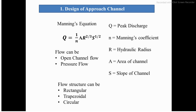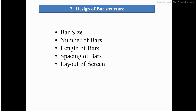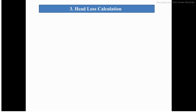The flow cross-section can be rectangular, trapezoidal, or circular. In the second step comes the design of the bar structure, where bar size, number of bars, length of bars, bar spacing, and layout of the screen are discussed. In the third step, we do the head loss calculation, for which there are two formulas.